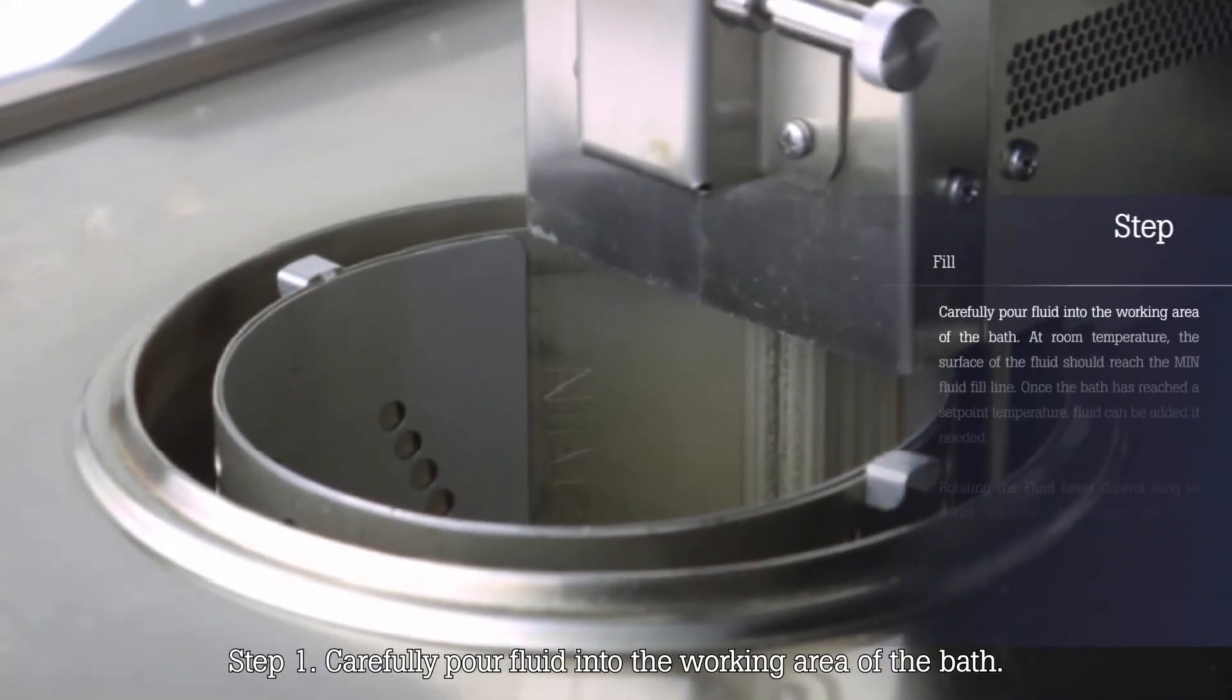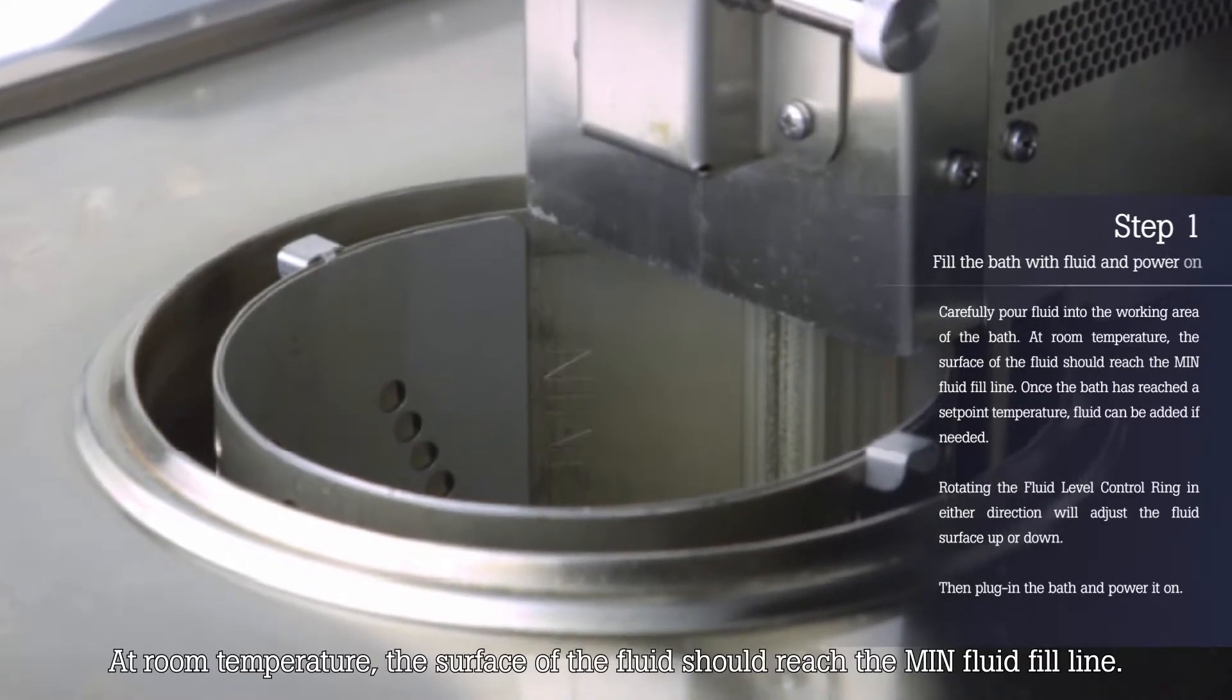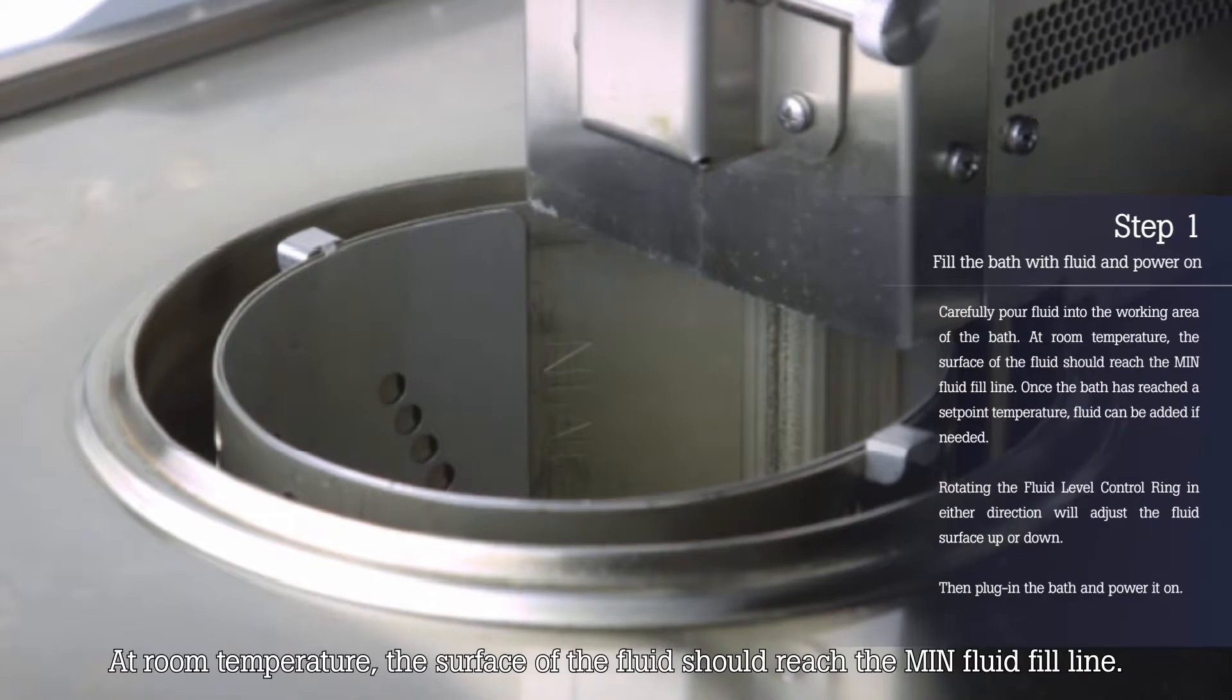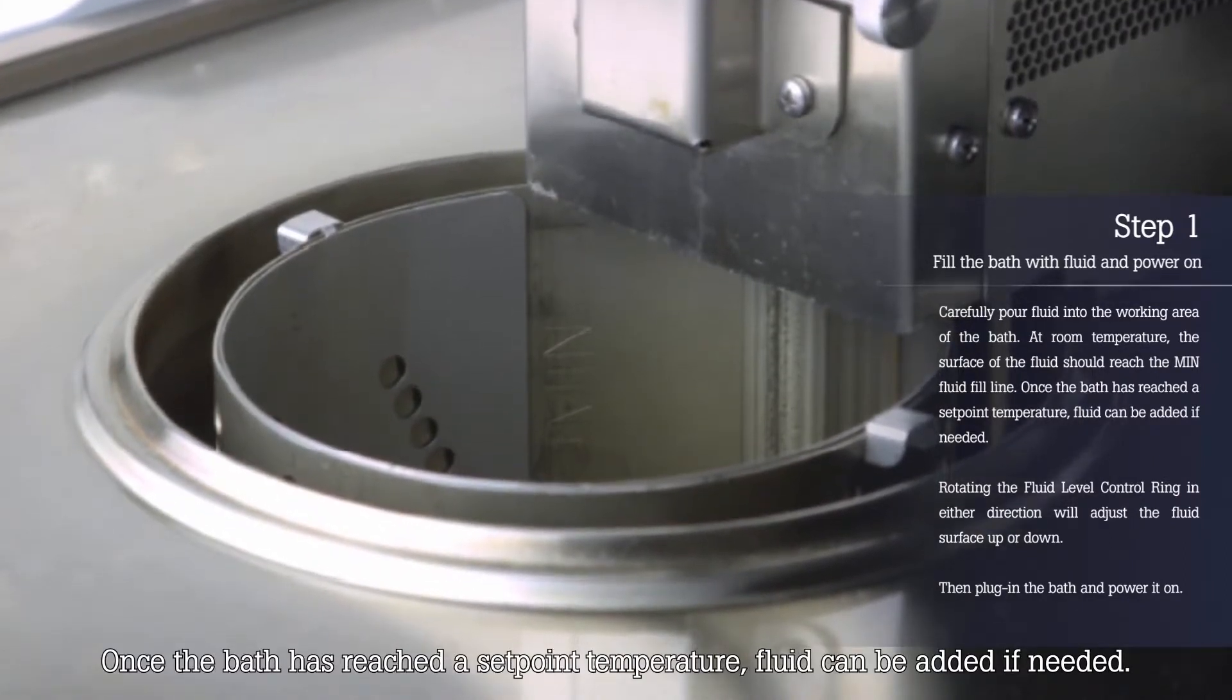Step 1. Carefully pour fluid into the working area of the bath. At room temperature, the surface of the fluid should reach the min fluid fill line. Once the bath has reached a set point temperature, fluid can be added if needed.